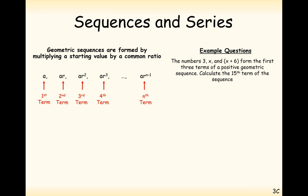Another challenging question: the numbers 3, x, and x plus 6 form the first three terms of a positive geometric sequence. Calculate the 15th value. To do this we need to find A and R. Starting with 3 as the first term, multiplying by R gives 3R, and multiplying again gives 3R squared. We need to identify the common ratio from the given terms.